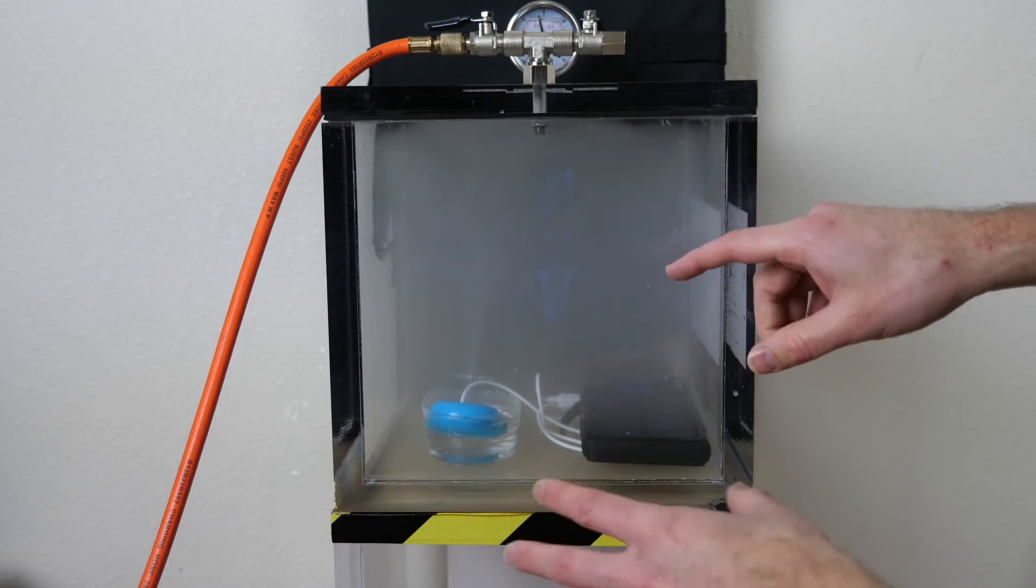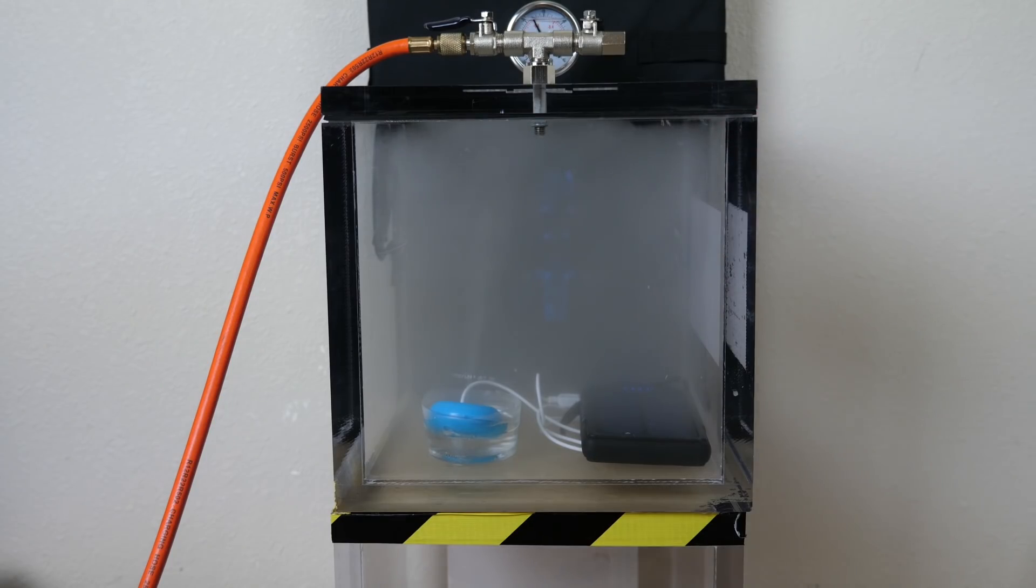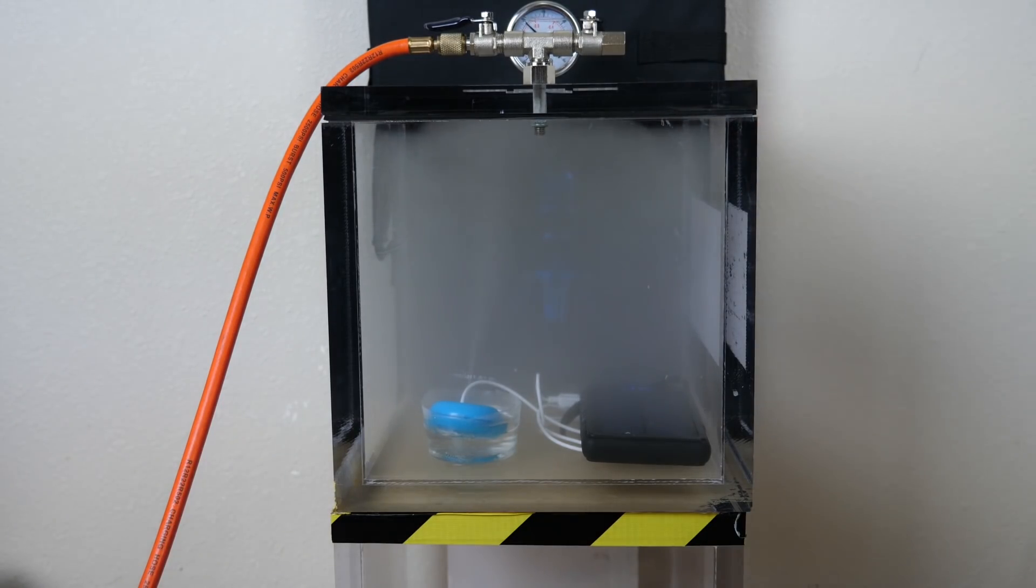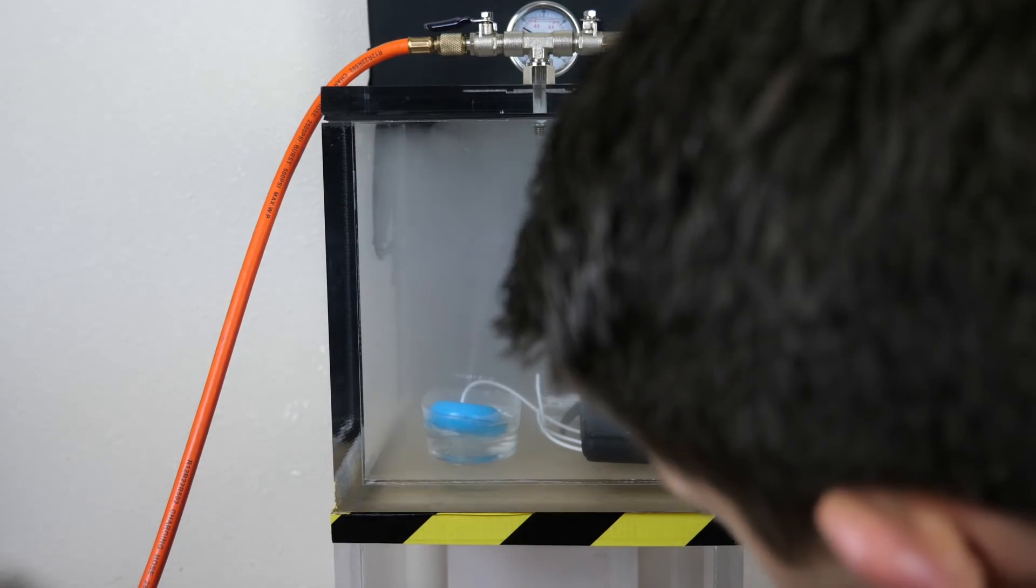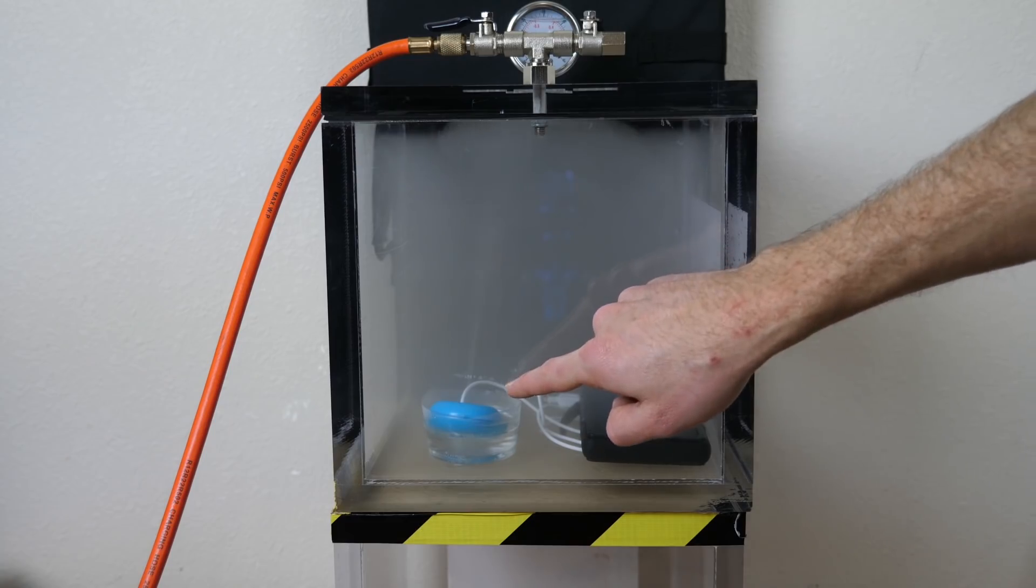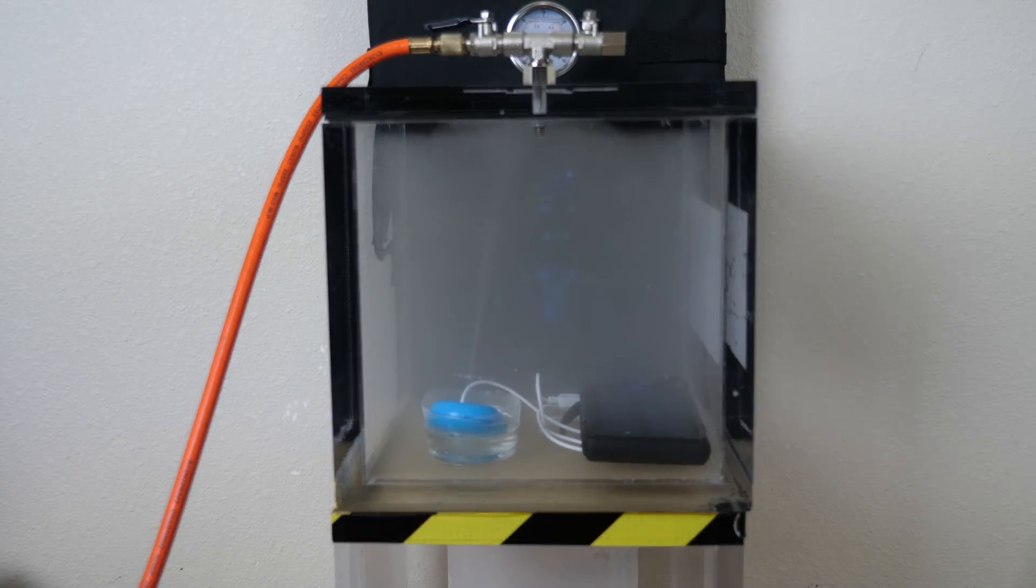Looks like the mist is still floating around just fine. We're at 0.4 atmospheres. 0.3 atmospheres. Starting to look a little different. If you notice, look at that stream of mist coming right out of the center.